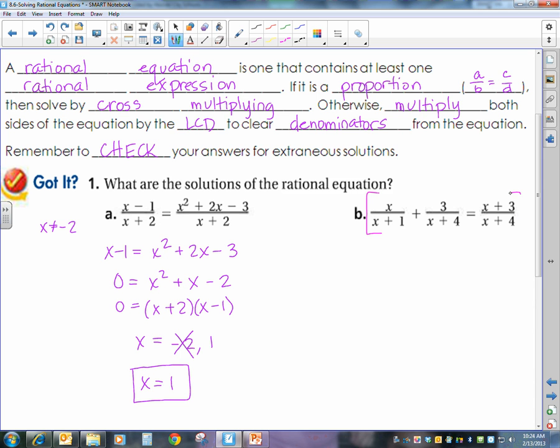So when I write it, because I have an equation, I do not have to multiply by 1, but I'm going to multiply both sides of the equation by the same thing. So I'm multiplying by x plus 1 times x plus 4, and I'm going to multiply everything inside of these brackets by this expression.